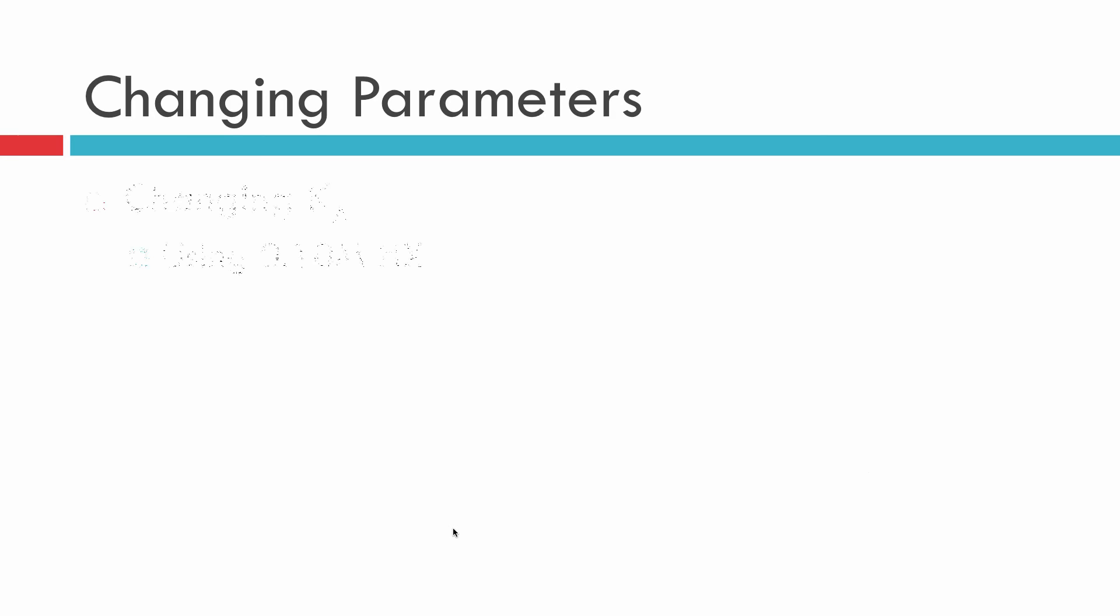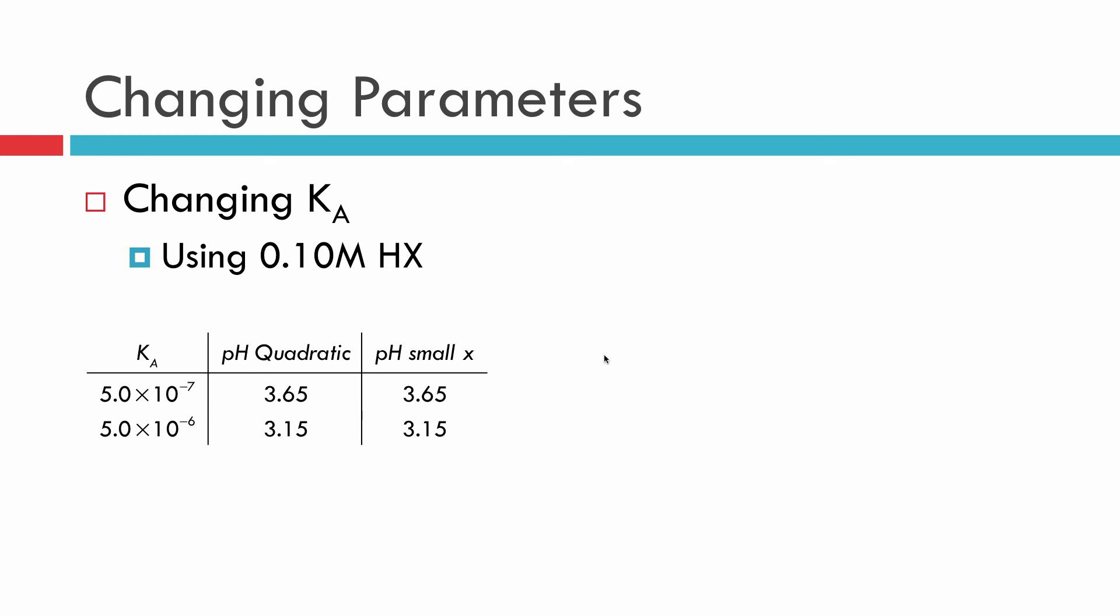We're going to change the parameters one at a time. Let's start by changing the equilibrium constant and use the same initial concentration of the acid. For each of these, I'm going to give you a new Ka. I'm going to give you the pH that was created from the quadratic equation and the pH from using the small x approximation. The one we did was 3.65 and 3.65 for the 10 to the minus 7th. If I do 10 to the minus 6th, look at that. It still works. If I do 10 to the minus 5th though, well, I tell you what, that's pretty darn close, but it's not dead on. It's starting to waver. And now we're getting too far apart. At 10 to the minus 4th, this thing breaks down for sure. 10 to the minus 5th, it's borderline.